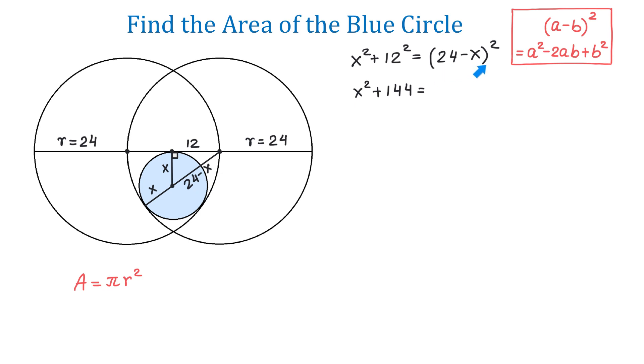According to this formula, first, we will raise 24 to the second power. This makes 576 minus... And now, we need 2 times a times b. That is, 2 times 24 times x. This makes 48x.